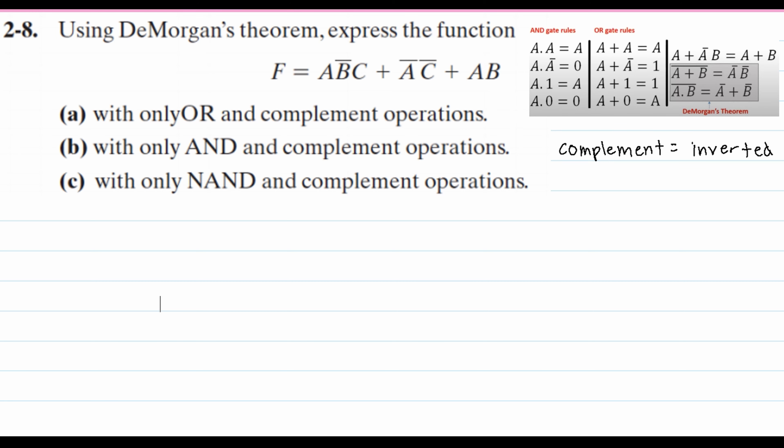In this problem, we're asked to use De Morgan's theorem and express the function F = ABC' + A'C' + AB.